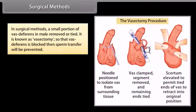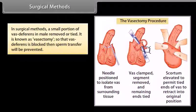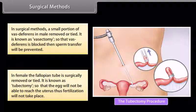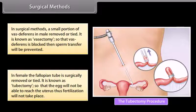Surgical methods: A small portion of the vas deferens in the male is removed or tied, which is known as vasectomy, so that sperm transfer will be prevented. In females, the fallopian tube is surgically removed or tied, which is known as tubectomy, so that the egg will not be able to reach the uterus and fertilization will not take place.